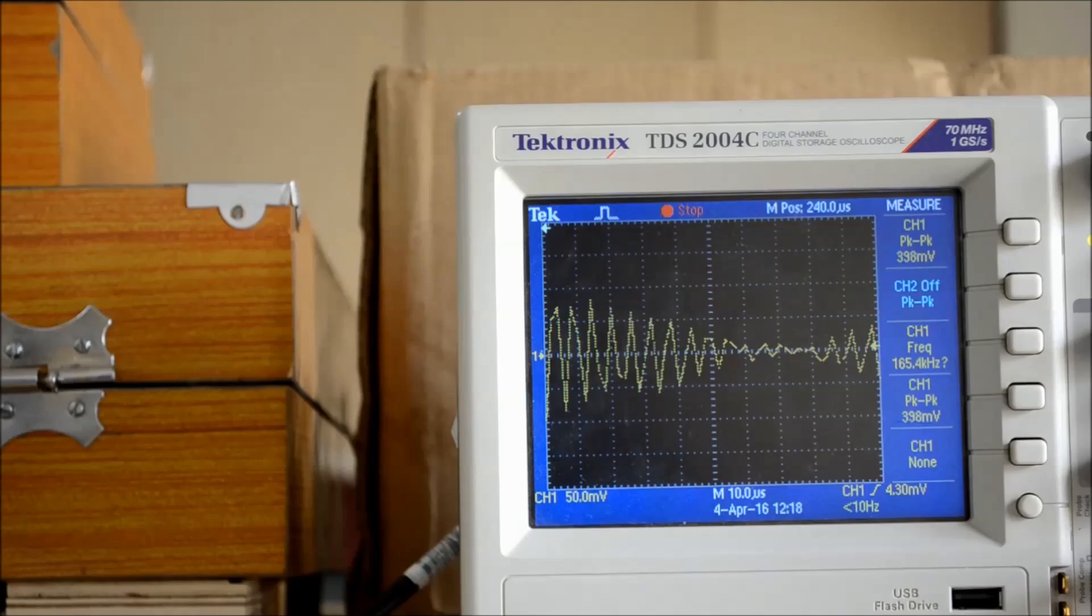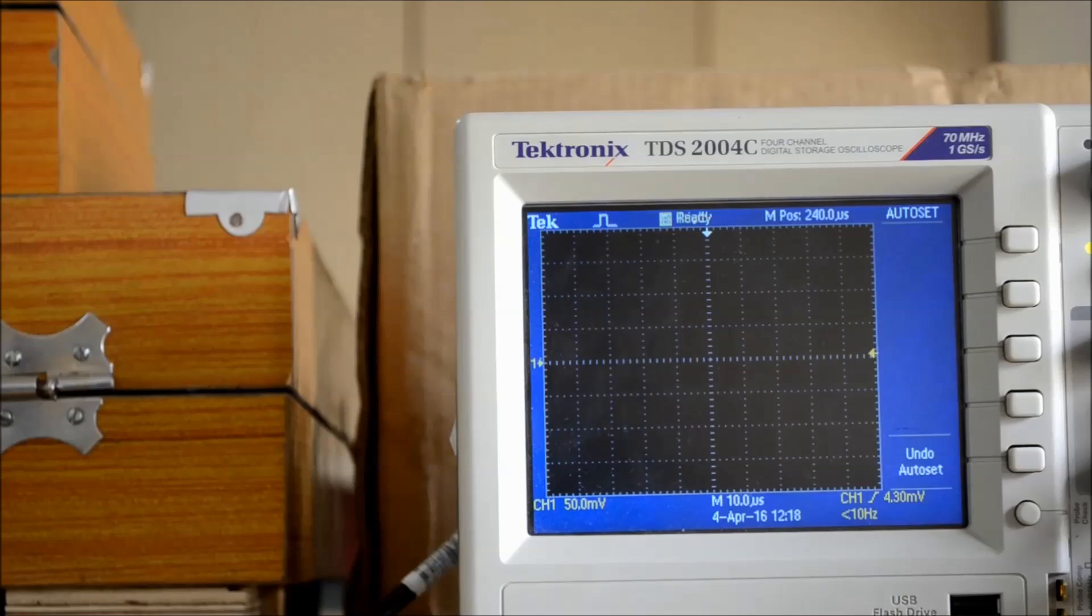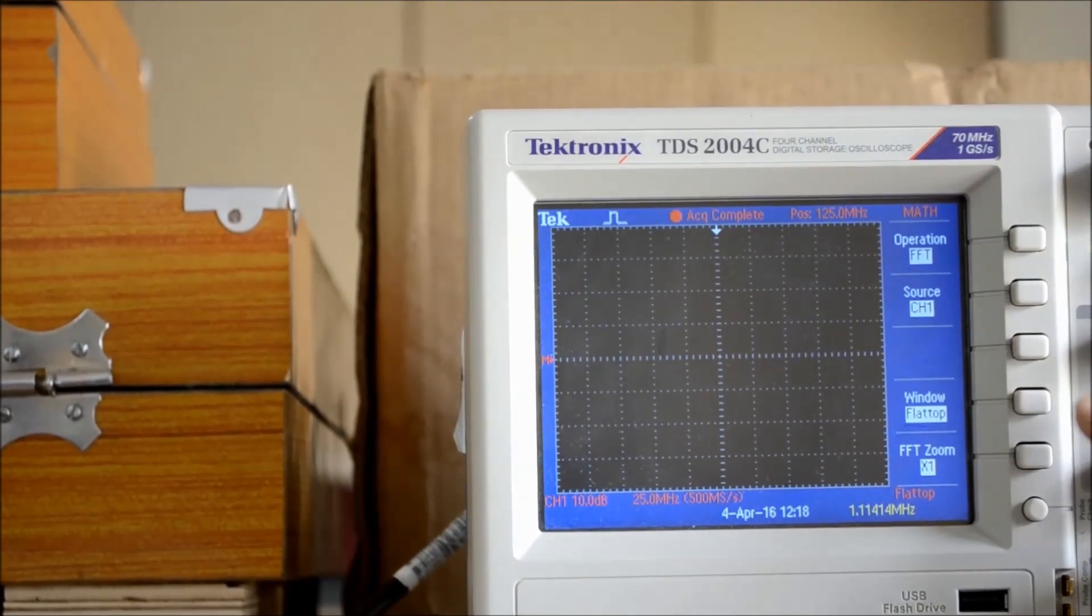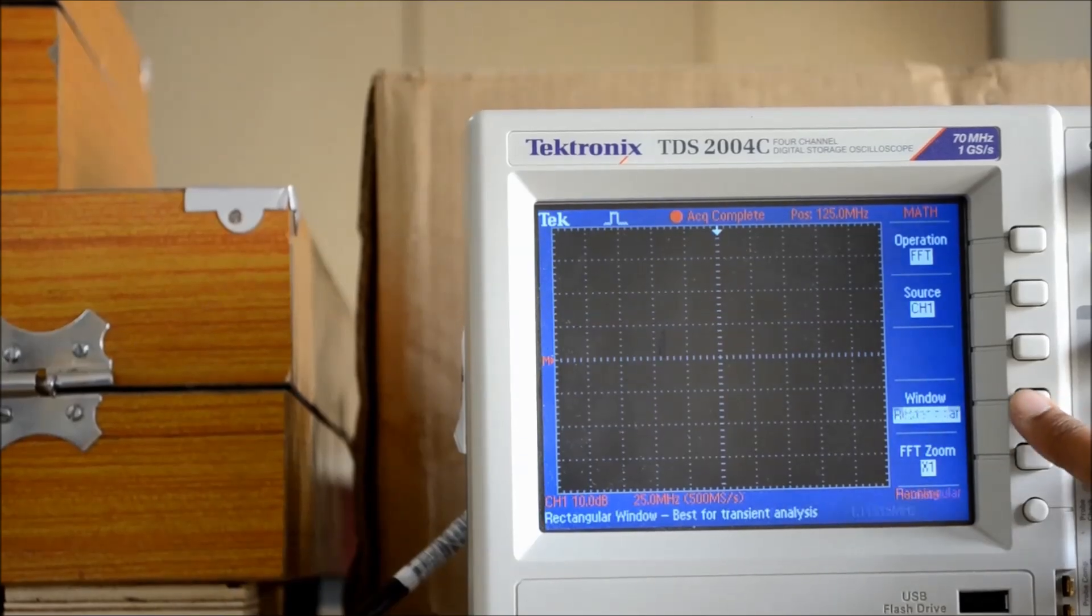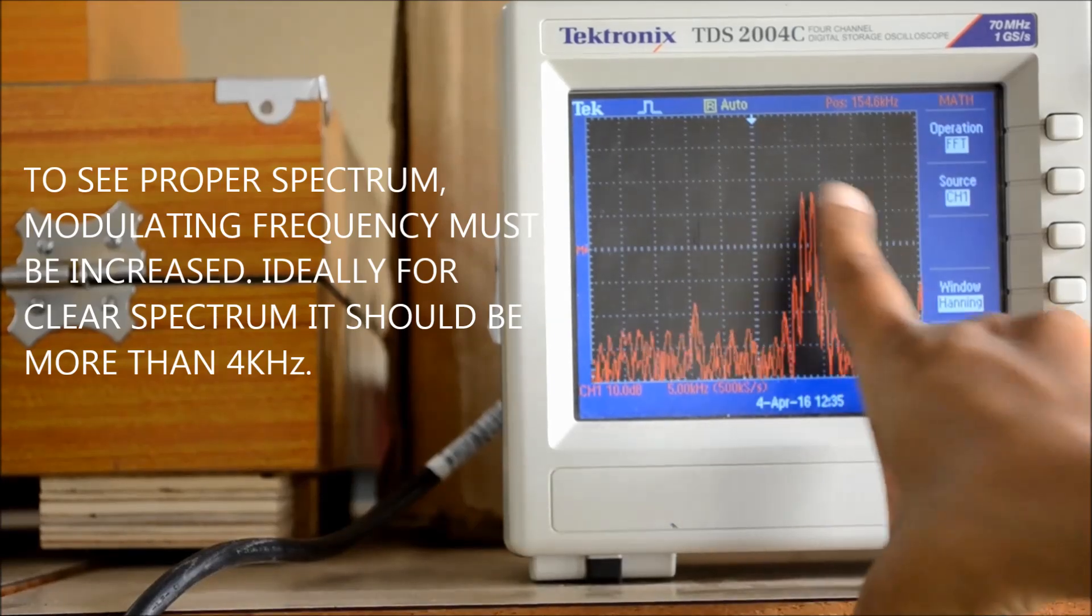So this is the DSB-SC wave generator. To get the frequency spectrum, we are using the math function. Press the math button. This is the operation FFT, window, handling. So we are getting the spectrum of the DSB-SC signal - LSB, USB, and the suppressed carrier.